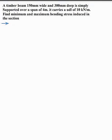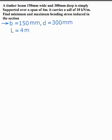A timber beam 150 mm wide and 300 mm deep is simply supported over a span of 4 m. It carries a UDL of 10 kN per m. Find the minimum and maximum bending stress induced. Writing down the given data: width B is 150 mm, depth D is 300 mm, span L is 4 m, and UDL load W is 10 kN per m.